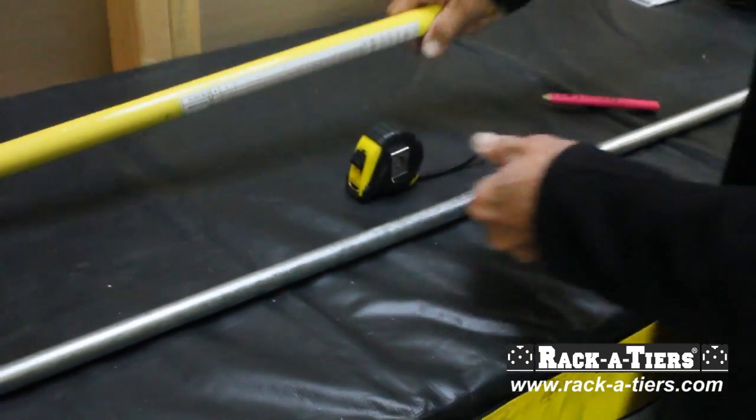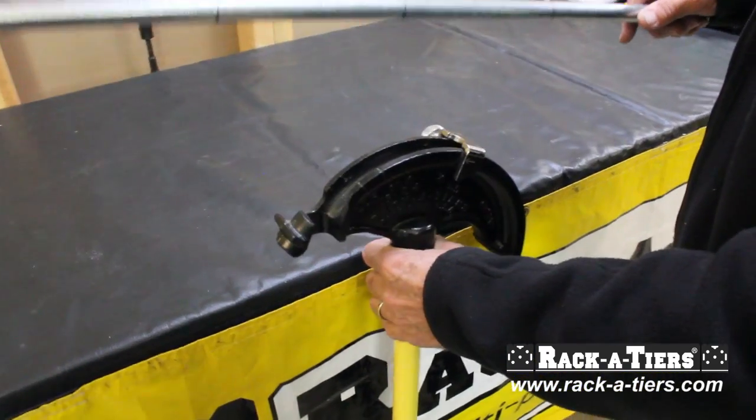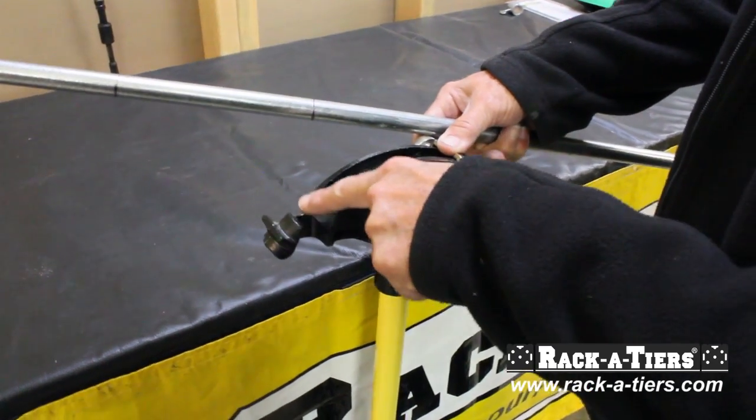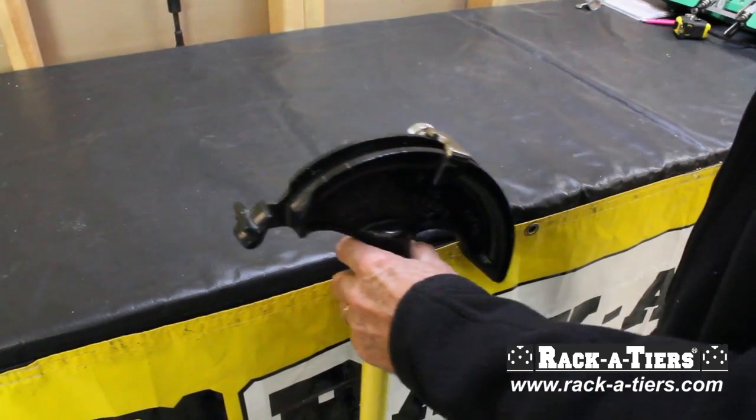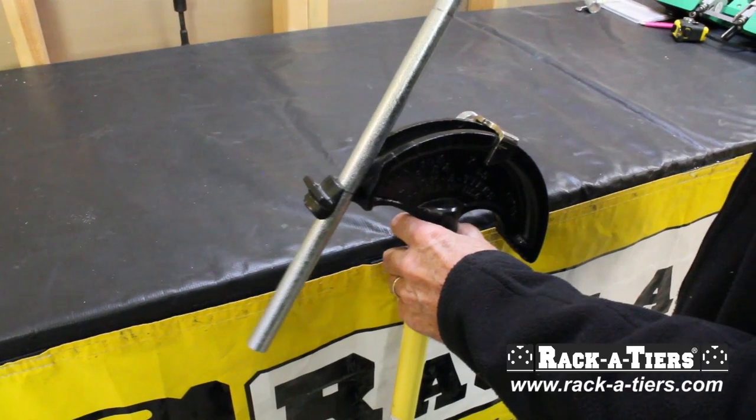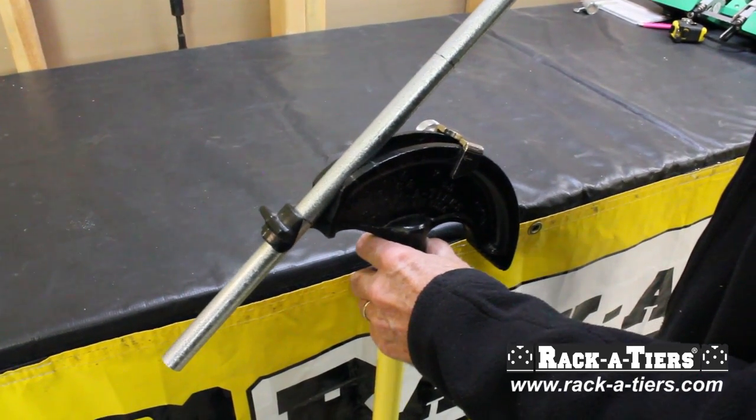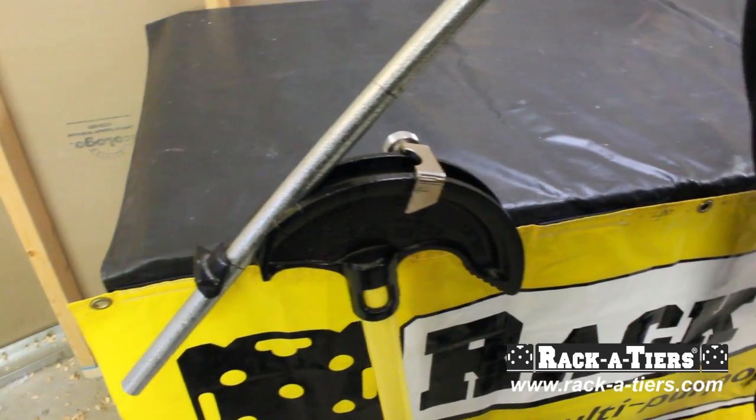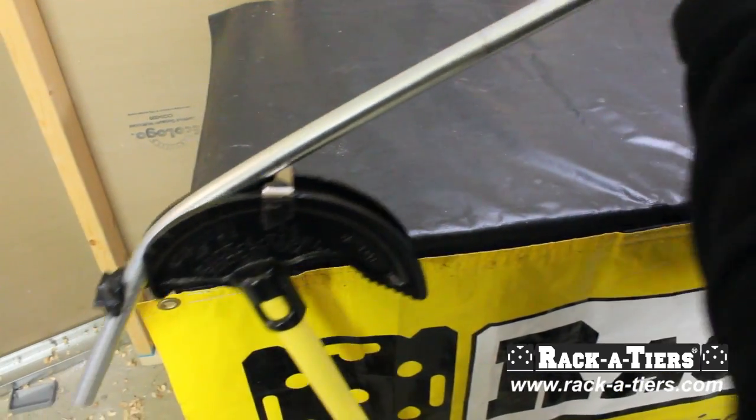Now we take the Hoppy Bender. When bending the pipe, it's important to always go to the same part of the guide. We'll take our first mark, stick it in the bender, and go to the stop.